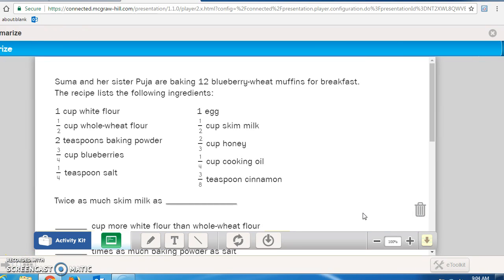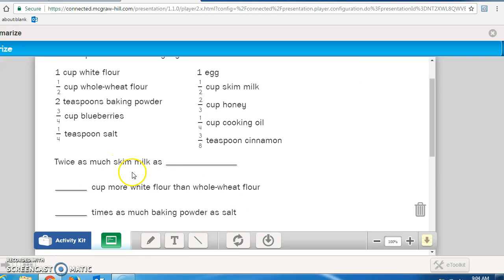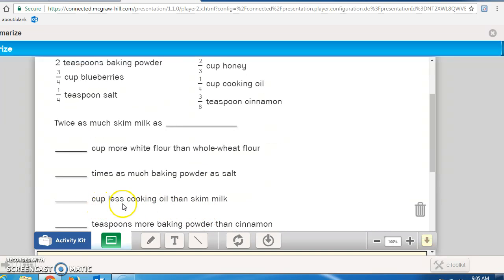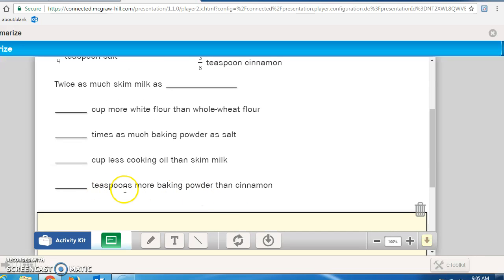Next, you're going to do Math Journal page 233. This one says, Suma and her sister Pooja are baking 12 blueberry wheat muffins for breakfast. The recipe lists the following ingredients. What is twice as much skim milk as? So you're going to look at skim milk and look at what half of it is because twice as much means that you multiply the number by 2 to get the skim milk's answer. How many cups more white flour than whole wheat flour is there? And how many times as much baking powder as salt? How many cups less cooking oil than skim milk? How about teaspoons more of baking powder than cinnamon? Find these answers, fill them in, and then check them.